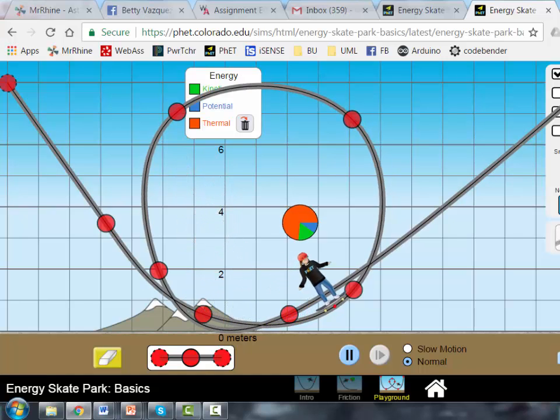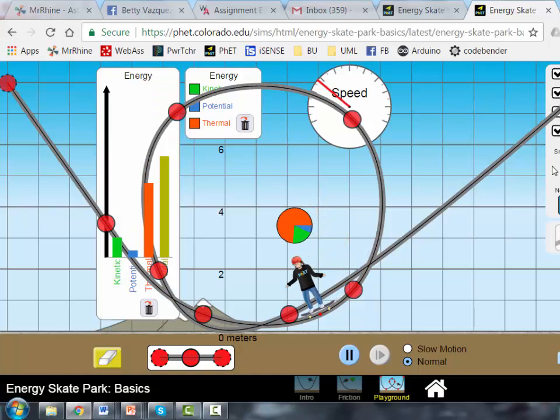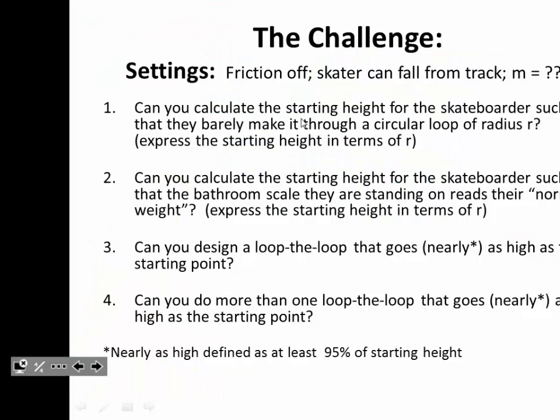You can actually use your pie charts if you'd like to help yourself. There's a speed indicator you can have. You can try changing the mass of the person to see if that helps you. But can you get him to go up, let's say, this high where you're just a fraction below the 8 or actually at the 8 and they can go through? So that's the challenge.